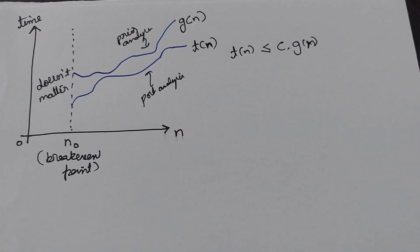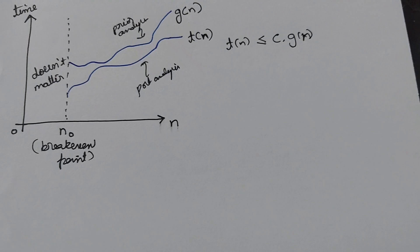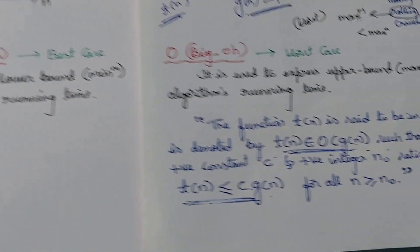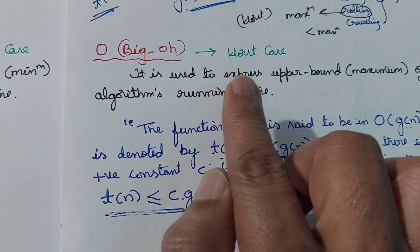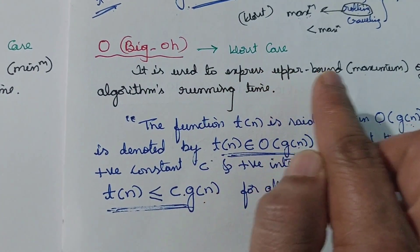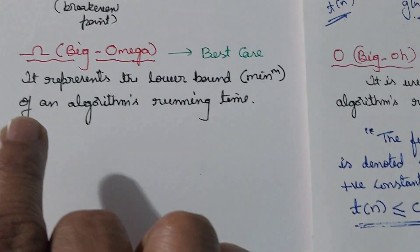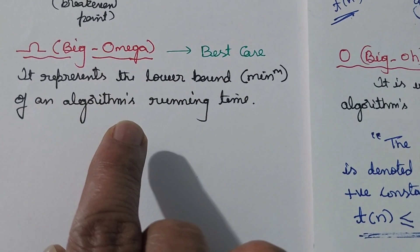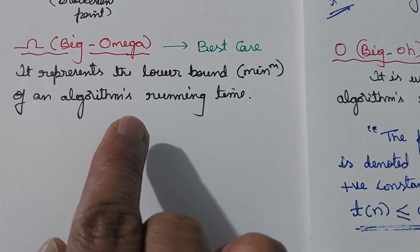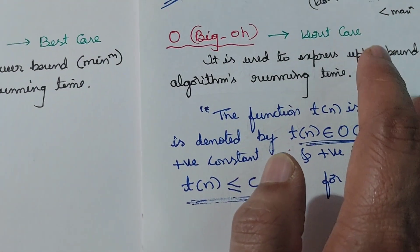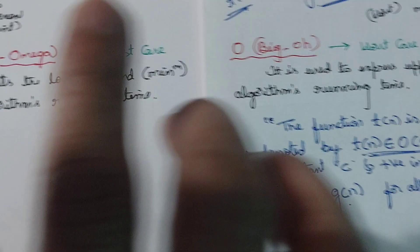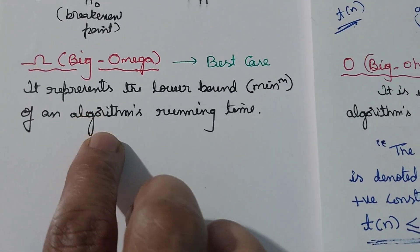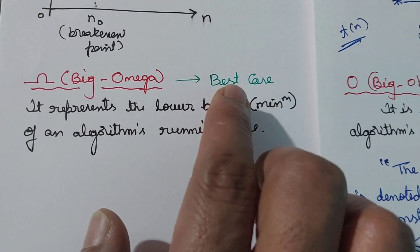Now we will discuss Big Omega, which represents the best case. Big O is used to express the upper bound, whereas Big Omega is used to represent the lower bound of an algorithm's running time — that means the minimum amount of time, which is the best case.